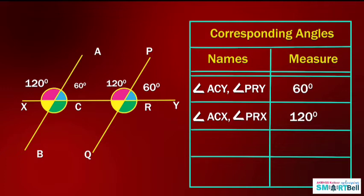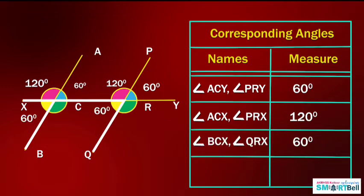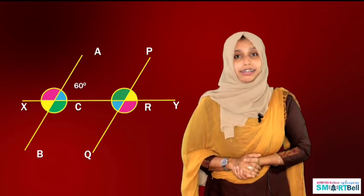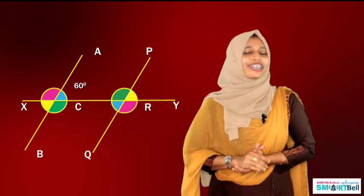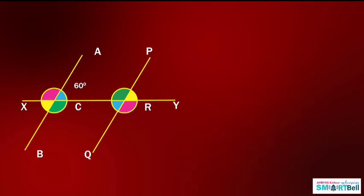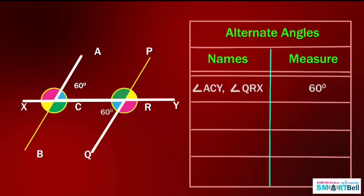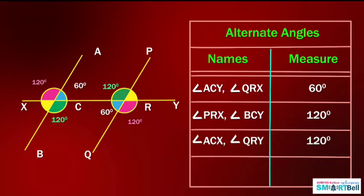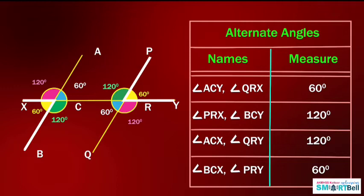Another pair of corresponding angles: angle BCY and angle QRY is 60 degrees. We know opposite angles are equal and the sum of a linear pair is 180 degrees, so angle BCX and angle QRX is 120 degrees. Similarly, we can find alternate angles. Angles with a reverse position are called alternate angles. Angle ACY and angle QRX is 60 degrees. The second pair of alternate angles: angle PRX and angle BCY is 120 degrees. Likewise, angle ACX and angle QRY is 120 degrees, and angle BCX and angle PRY is 60 degrees.